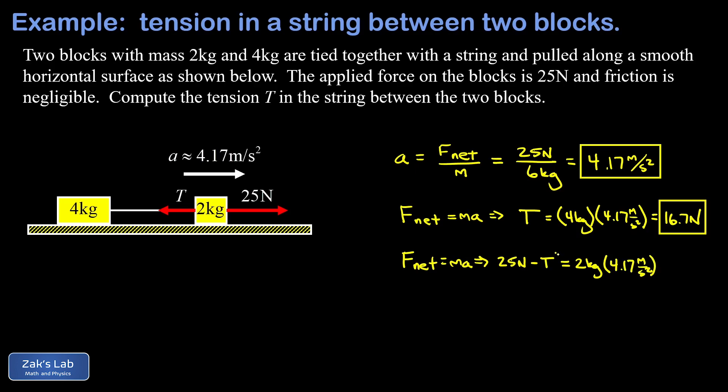So we need to isolate the tension here. And so the way I think about it is we add the tension to the right side, and then we subtract the 2 times 4.17 over to the left side. Solving for T there, we get that T is 25 newtons minus this 2 kilograms times 4.17 meters per second squared.